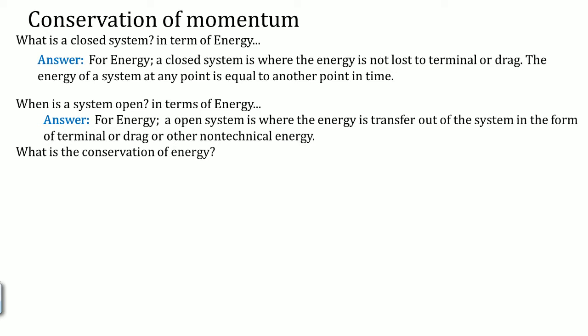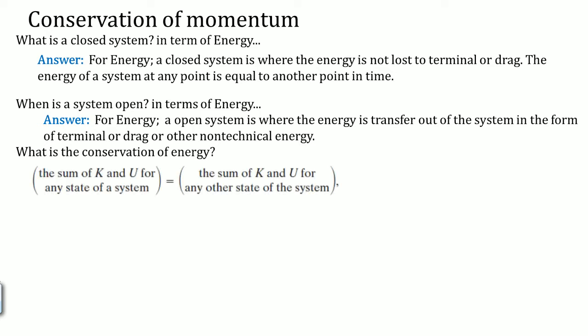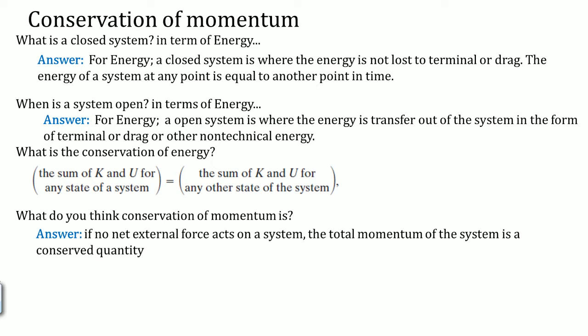Therefore, what is the conservation of energy? Basically, the sum of kinetic plus potential energy for any state of the system is equal to the sum of kinetic and potential energy for any other state of that system. Using that idea, you can think about what the conservation of momentum is. The answer: if there are no net external forces acting on the system, the total momentum of the system is conserved.